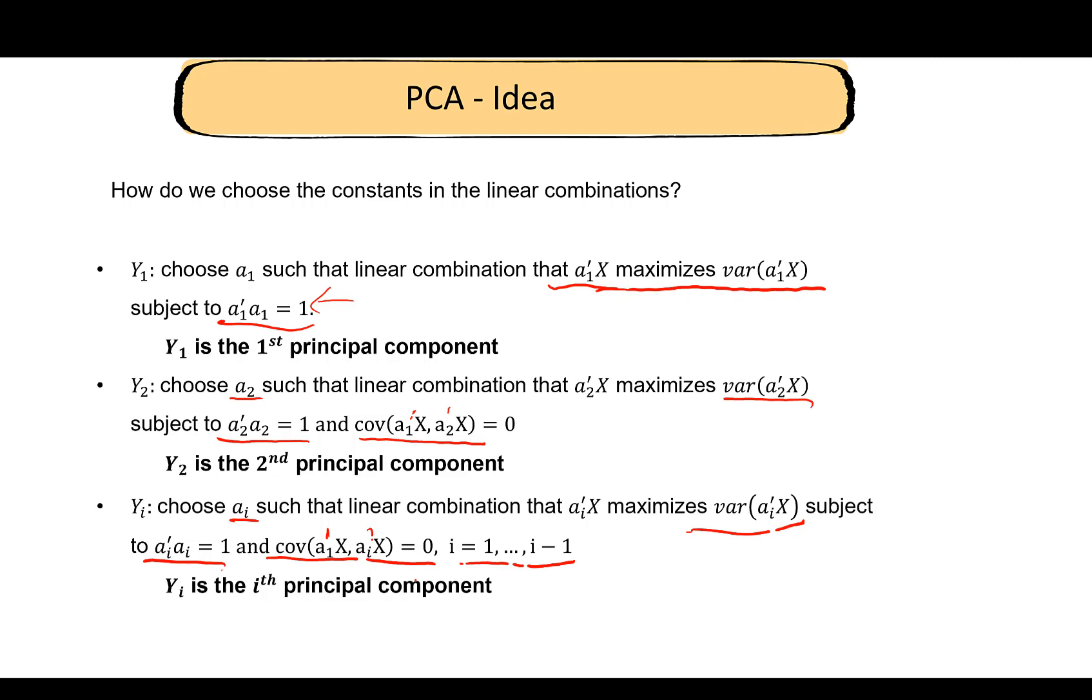You can see that we are constructing these new variables, which are basically the principal components, such that they maximize the variance in some sense and they're uncorrelated with each other. So two of the three objectives that I mentioned are satisfied here.